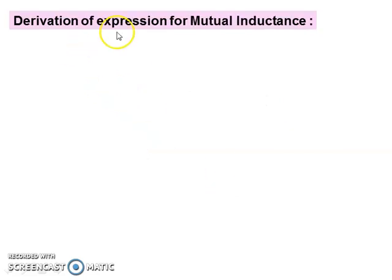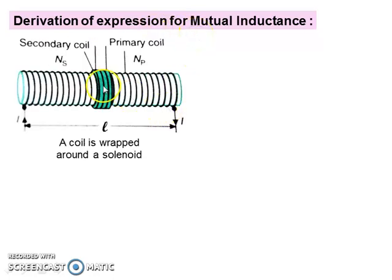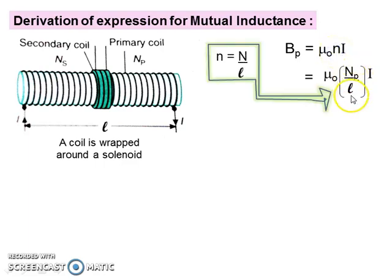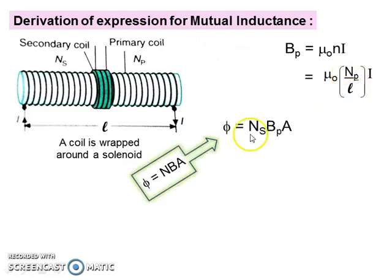Next, we do further derivation of an expression for mutual inductance. Consider the diagram where a coil is wrapped around a solenoid. The solenoid has current flowing through it, making it the primary coil, and the outer coil is attached to a voltmeter. The magnetic field is provided by the solenoid, so we use B = μ₀ni, replacing the turn density with Np/L. For the magnetic flux linked with the secondary coil, we use ψ = NsBA, where B is the field from the primary solenoid (Bp).